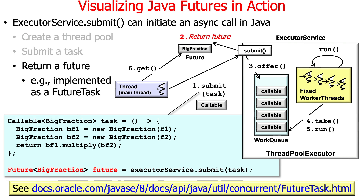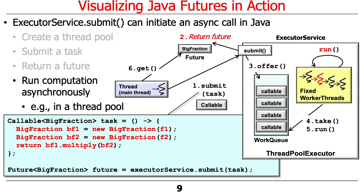What we get back is a Future to a BigFraction, which will be the result of doing the computation in the background. This is what actually gets run in the background — the business logic of the task. You can see it makes two BigFractions from two strings, and then multiplies them together. That multiplication will be done asynchronously in a thread in this fixed size thread pool.